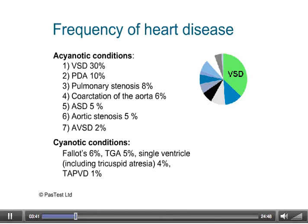Some of these congenital heart disorders are associated with genetic syndromes. For example, complete atrioventricular septal defects are associated with Down syndrome, left-sided problems such as coarctation of the aorta with Turner syndrome, and with Marfan syndrome, problems relating predominantly to the aortic root, such as aortic regurgitation and aneurysmal formation of the arch of the aorta.